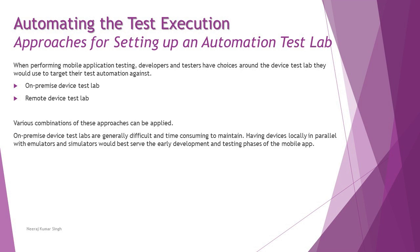This is the last topic and we are adding more value from the approaches for setting up an automation test lab. We have generally understood from our previous chapter what sort of labs can be utilized for mobile testing, and we have two options: on-premises and remote. Here we'll be talking about approaches to set up automation within a particular test lab. Developers and testers have choices around the device test lab they would use to target their test automation against.